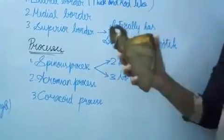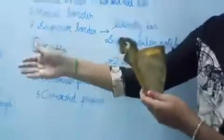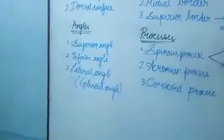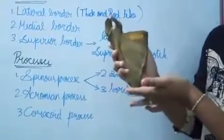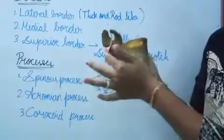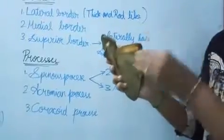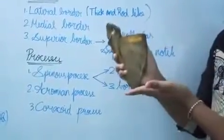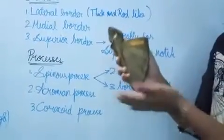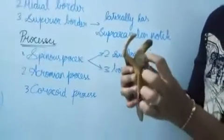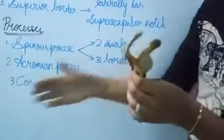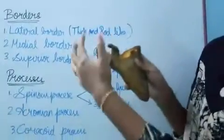Now the angles. There are three angles: the superior angle, inferior angle, and the lateral angle. The superior angle is covered by the trapezius muscle. The inferior angle is covered by the latissimus dorsi muscle. At the lateral angle we can see a cavity which is pear-shaped, called the glenoid cavity — hence it is also called the glenoid angle. This gives attachment to the head of the humerus, forming the shoulder joint.